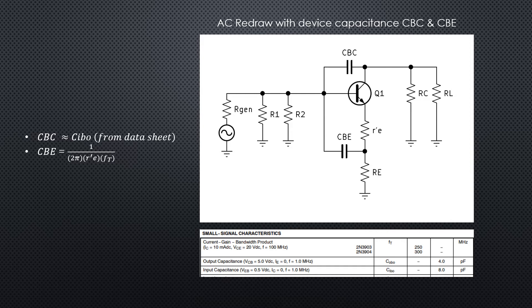You need to look that up for the transistor you're working with. And CBE equals 1 divided by 2π r prime E times the gain bandwidth product, which is FT, which is also in the data sheet.